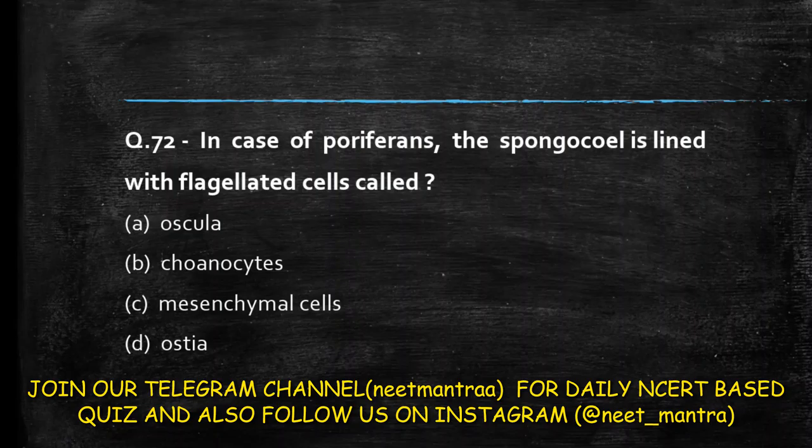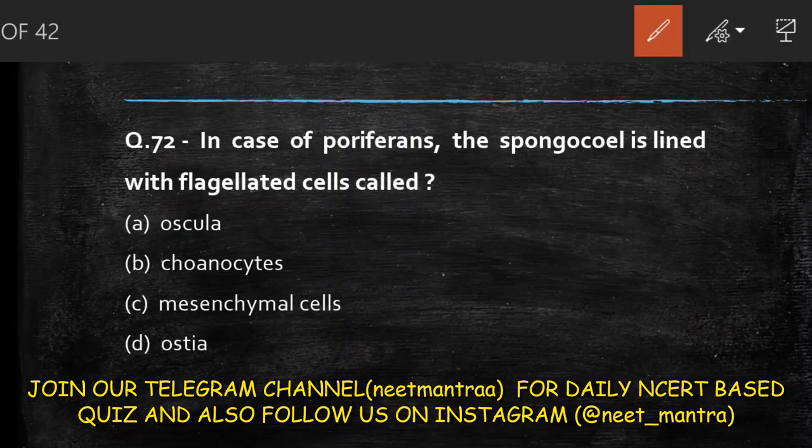Next question: in Porifera, the spongocoel is lined with flagellated cells called — oscula, choanocytes, mesenchymal cells, or ostia? The answer is option B: choanocytes.